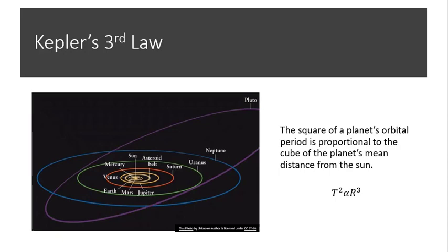The third law is mathematical. It's a relationship between the period, or the amount of time it takes for the object to complete one orbit, and the average distance from the object it's orbiting. The average distance is simply an average between the greatest and least distance, called the average radius. The square of the period is proportional to the cube of the average radius.